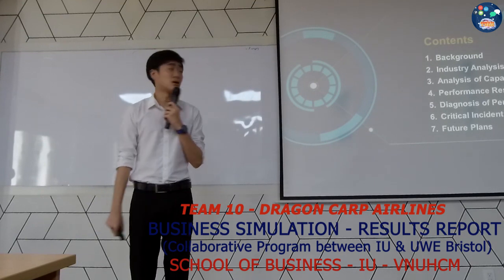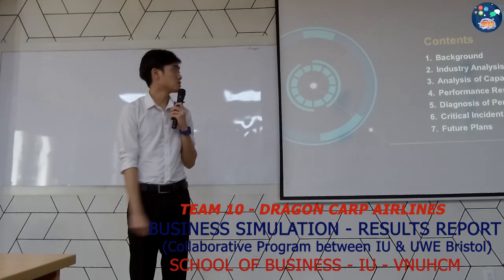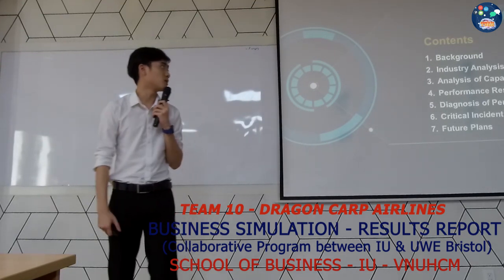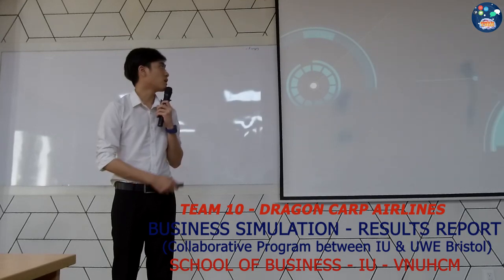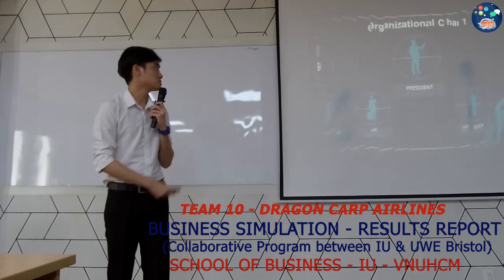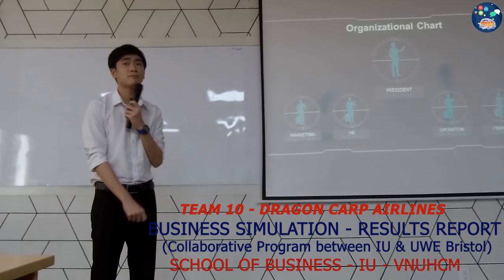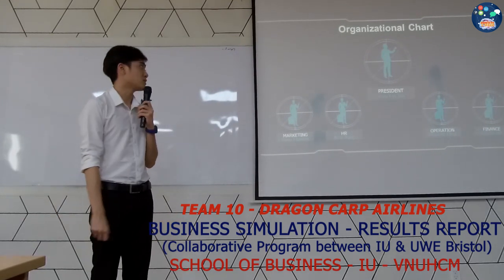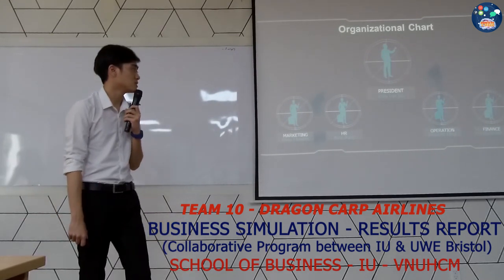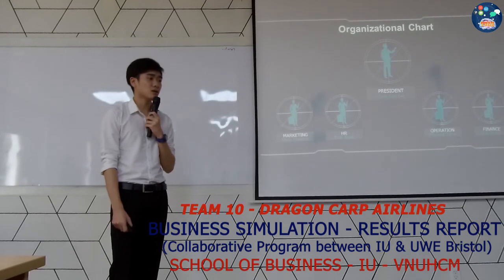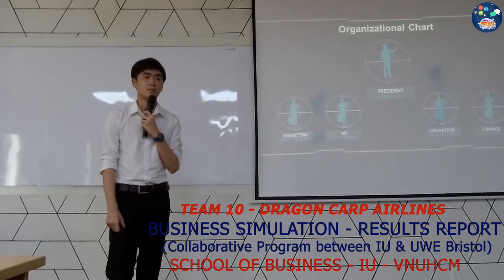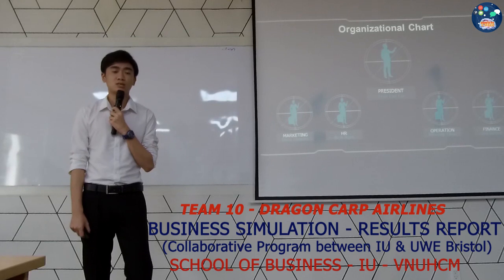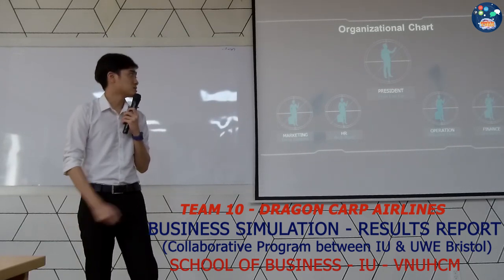There are seven parts to our presentation. Let's start with the first one: our background. I want to introduce you to our organizational trust. There are five positions, and each position will be responsible for specific activities. We usually have meetings in order to discuss and select the most suitable decision for our organization.